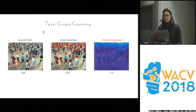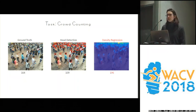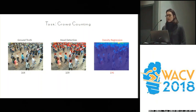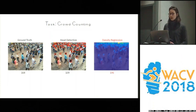In the crowd counting task, the goal is to count how many pedestrians are in one image. You can either do this using a head detector or density regression. They found that density regression outperforms the head detector, so they went with that solution.